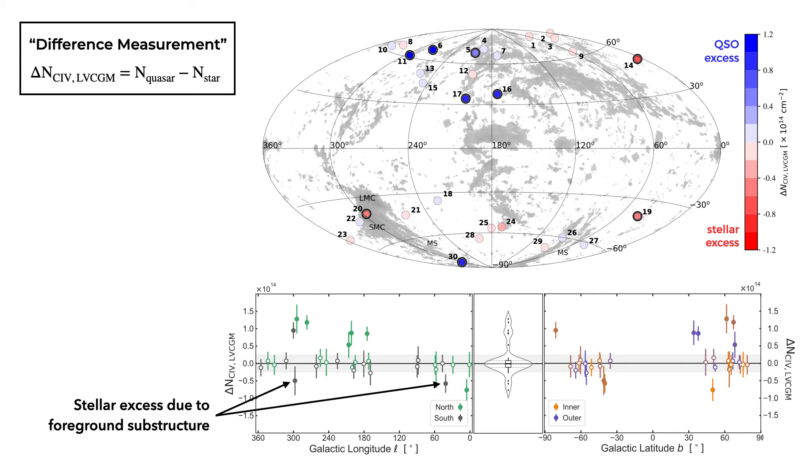A few of the detections have negative difference measurements, which is a bit counterintuitive but consistent with expected column density variations due to substructure in foreground gas. We also detect a previously identified low-velocity halo cloud sitting within 22 kiloparsecs of the disk just beyond the halo stars. However, the majority of difference measurements are non-detections consistent with noise.